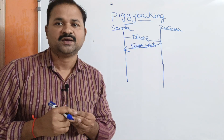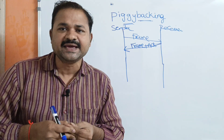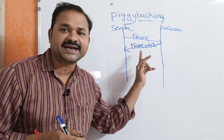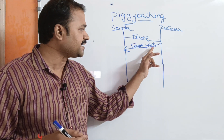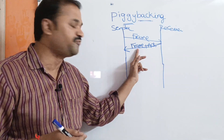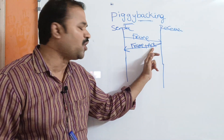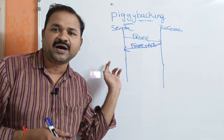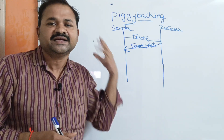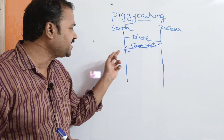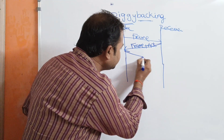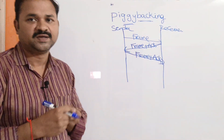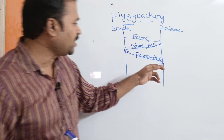Piggybacking is a technique of delaying acknowledgement until the next frame is available. The acknowledgement is appended to the frame to be sent, so frame plus acknowledgement will be sent together. Now the sender receives the frame but also waits until its next frame is available. Once the sender has its frame, it will send its own frame along with acknowledgement for the previous frame.